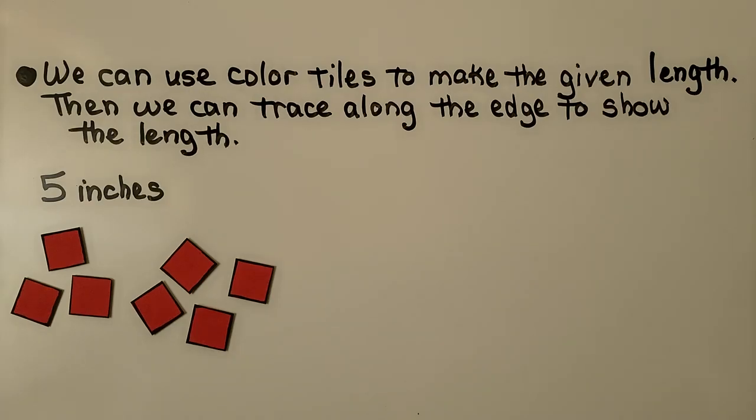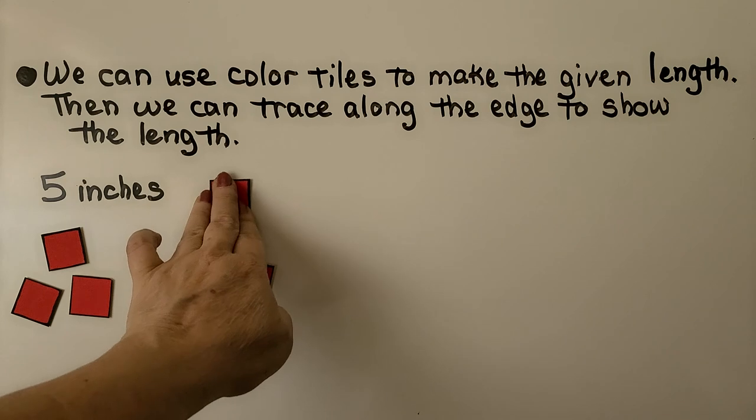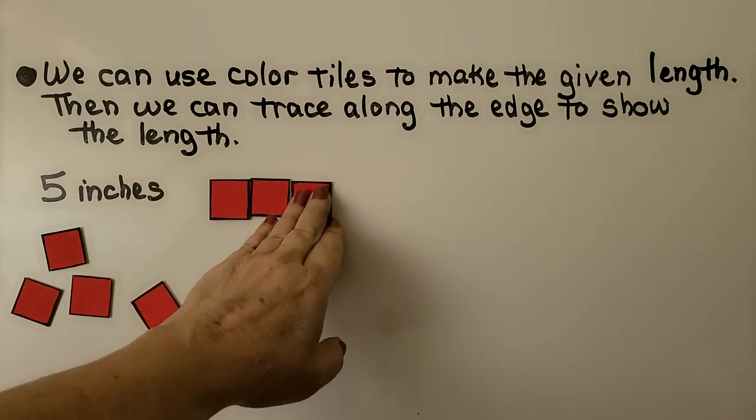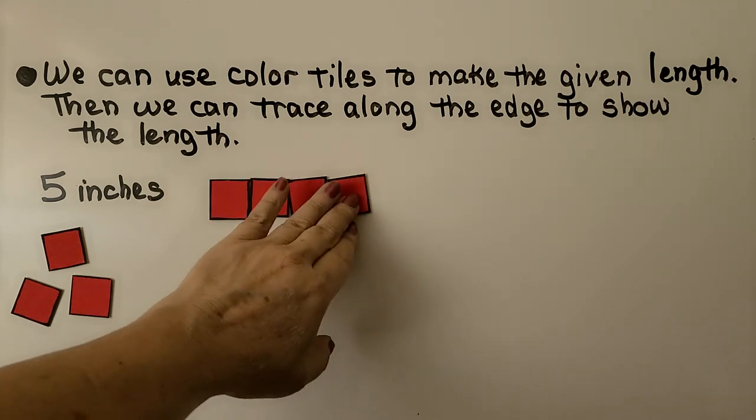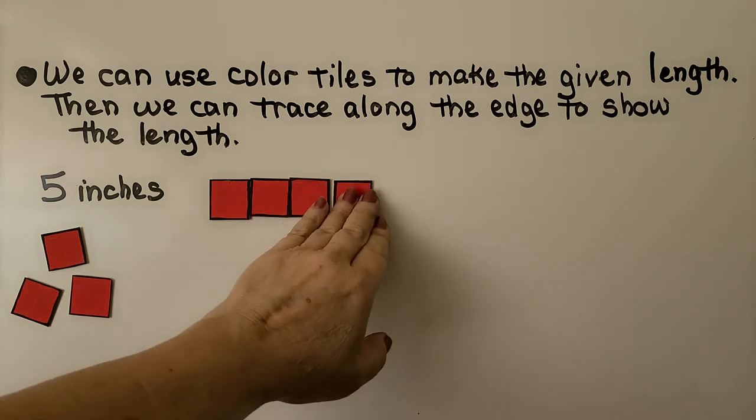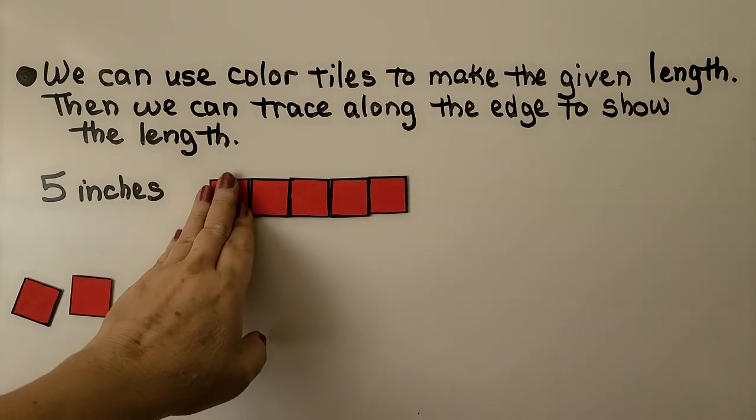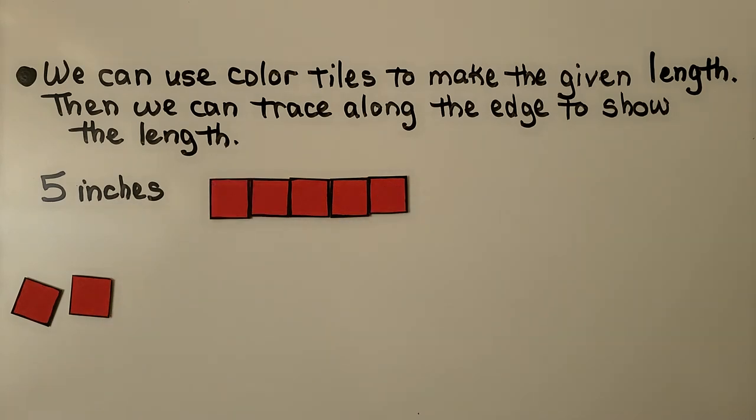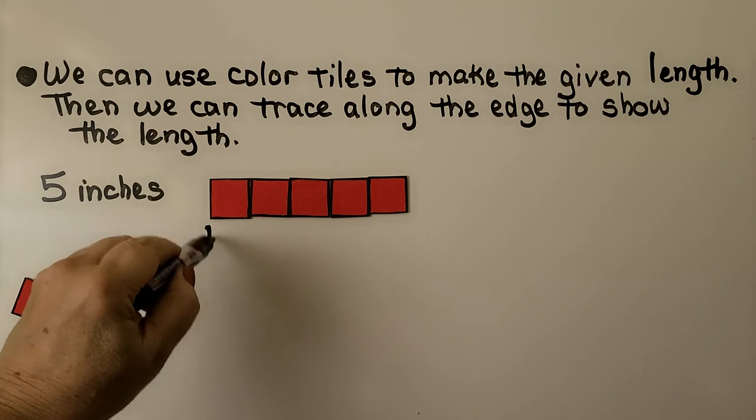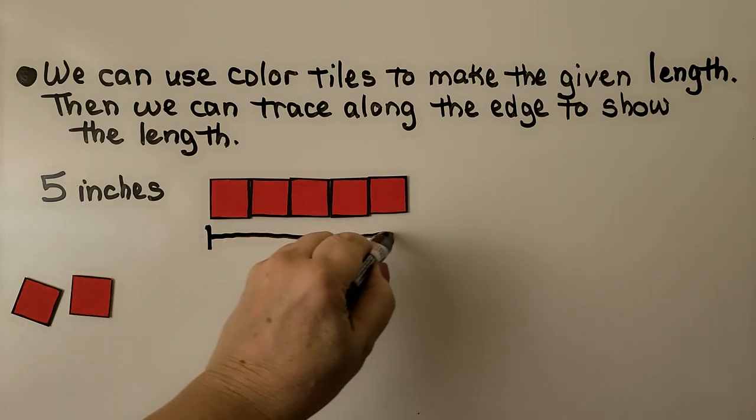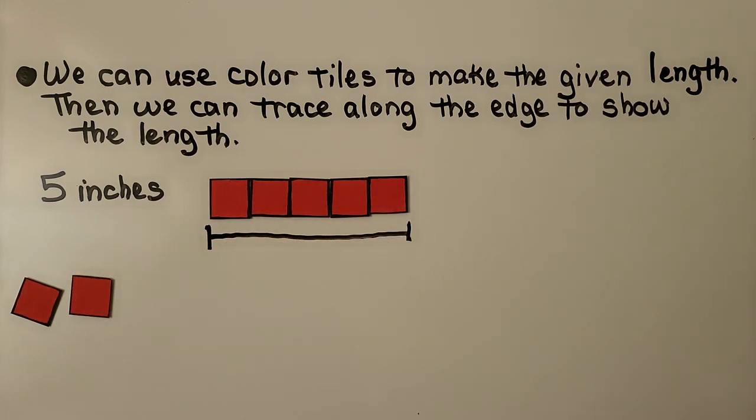We can use color tiles to make the given length. Then we can trace along the edge to show the length. So if we've made our one inch color tiles, we can show five inches by putting five of them together. We make sure there's no gaps or overlaps. We put them side by side nice and neatly and we can say from this point all the way across to this point is five inches.